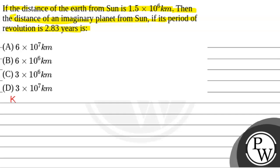First of all, we will see what will be the key concept used to solve this question. The key concept that will be used is that time period is related to distance if t square is directly proportional to r cube.